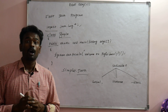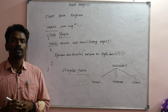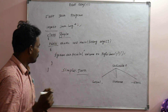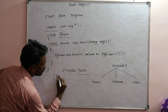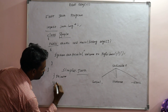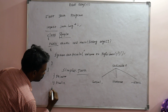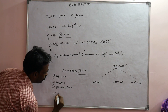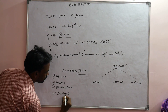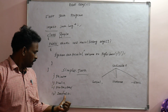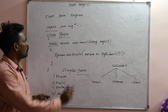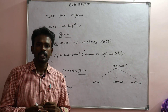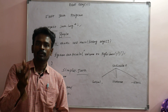In Java, since the focus is on objects, we use access specifiers. The access specifiers available in Java are: private, public, protected, and default. Java has an additional 'default' access specifier compared to C++. If a function uses an access specifier, it controls which other functions or classes can access it.